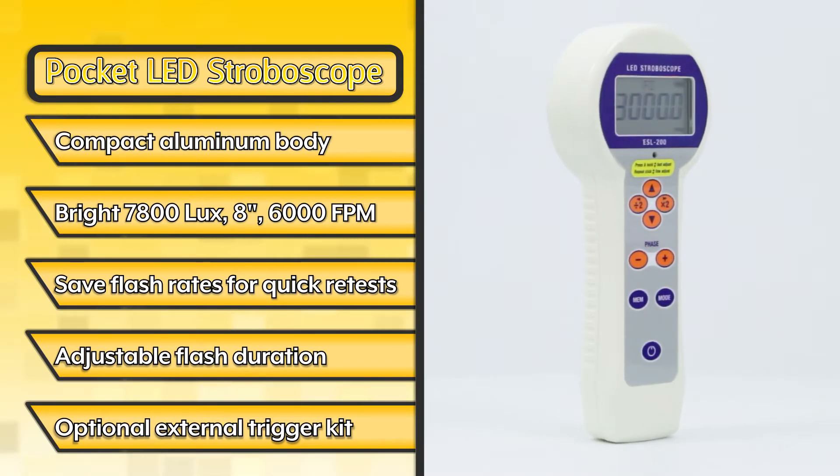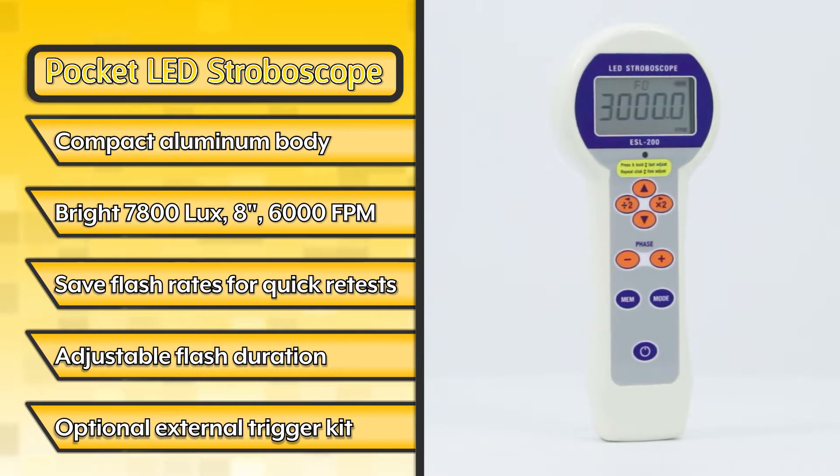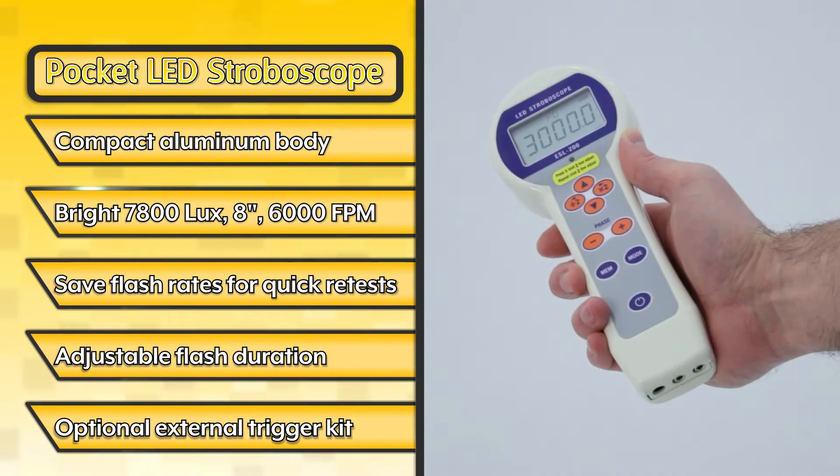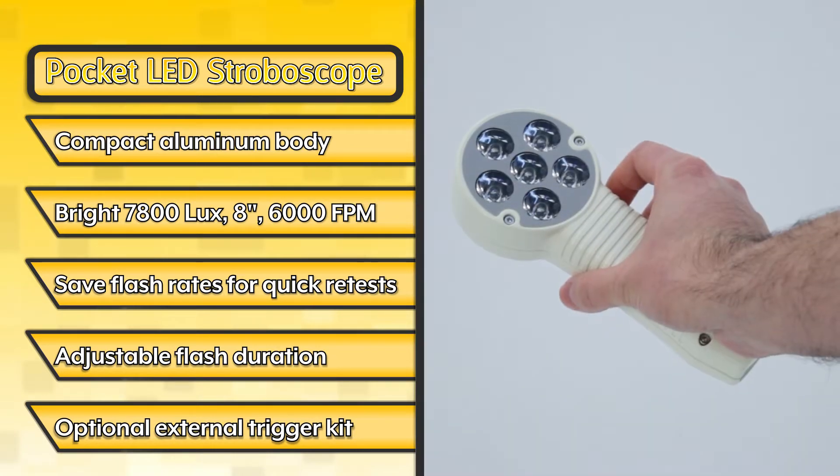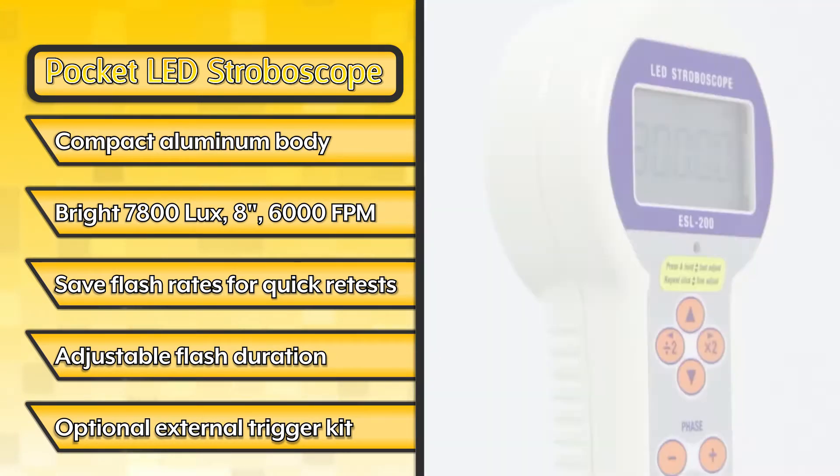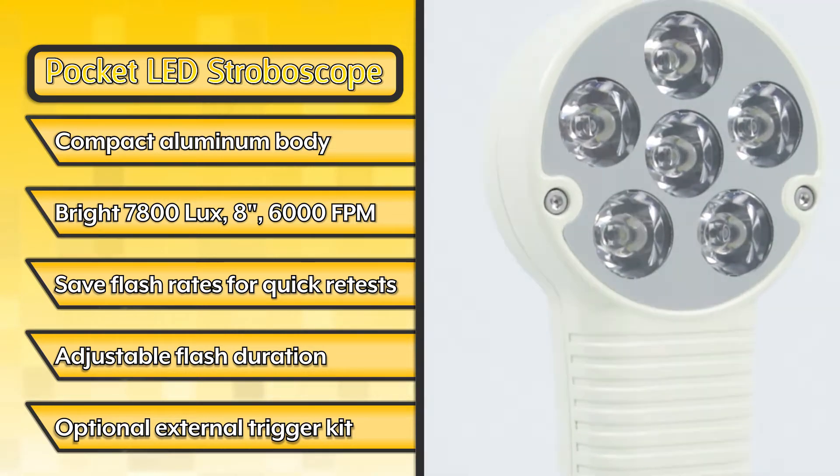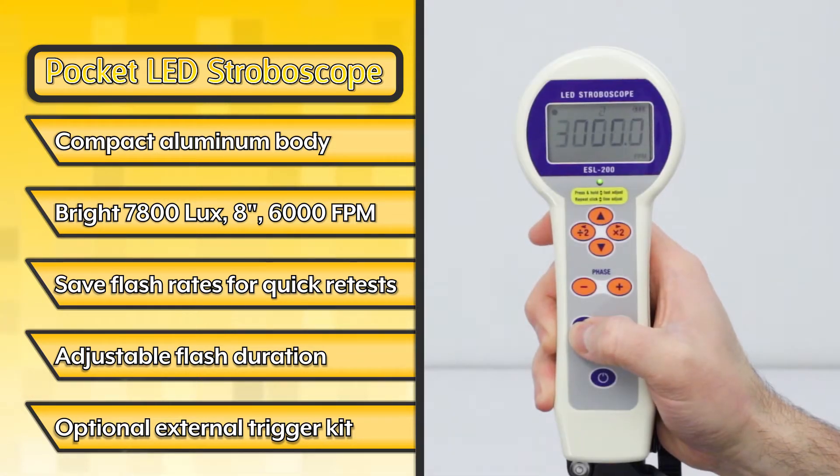The pocket LED stroboscope features a compact ergonomic design with an aluminum body. The ultra-bright 6 LED array features a brightness rating of 7800 lux at 8 inches and 6,000 flashes per minute. Store up to 9 flash rates in memory for quick retests.